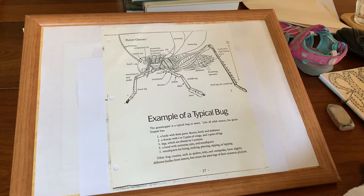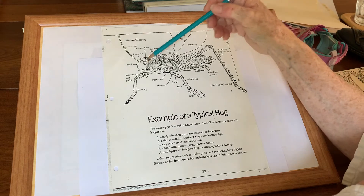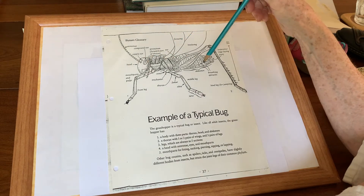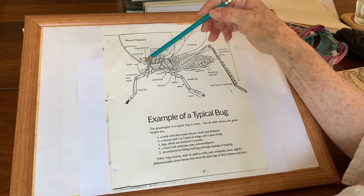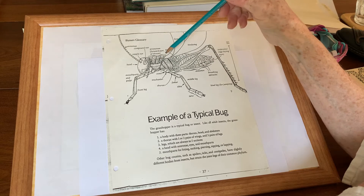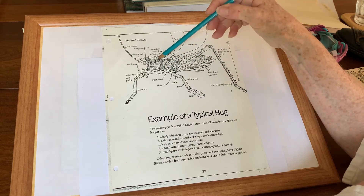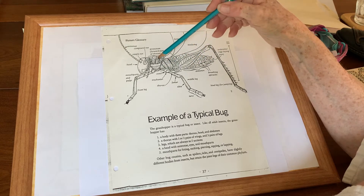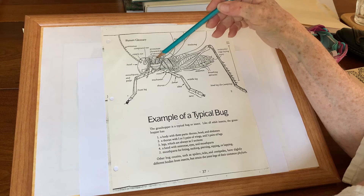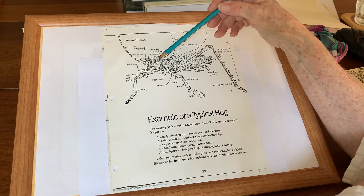But it has to have the main features of a true insect. Insects have three main body parts: the head, the thorax, and the abdomen. Anything that's connected is connected to the thorax.